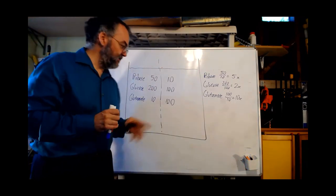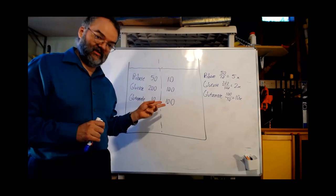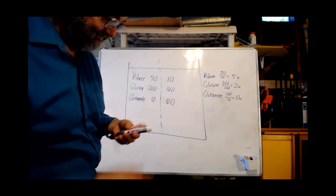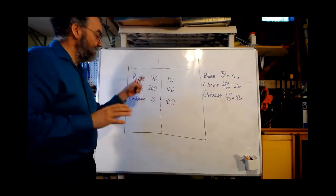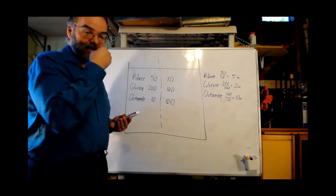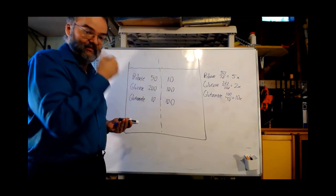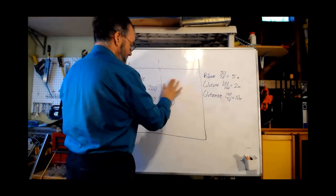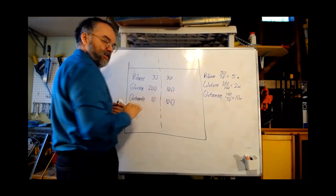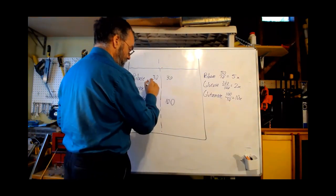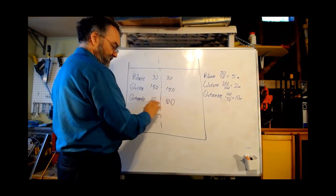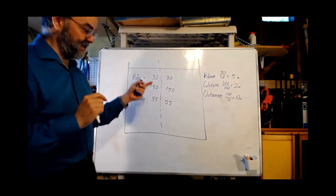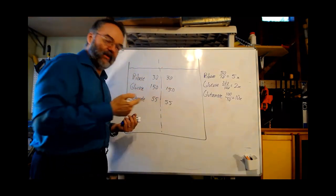Now let's talk about the equilibrium concentrations. Assuming the two sides are equal in volume, the final concentration on each side is the average. Ribose: 50 and 10 together is 60, split in half gives 30 and 30. Glucose: 200 and 100 together is 300, split in half gives 150 and 150. Glutamate: 10 and 100 together is 110, split in half gives 55 and 55. Overall movement went from high to low for each.